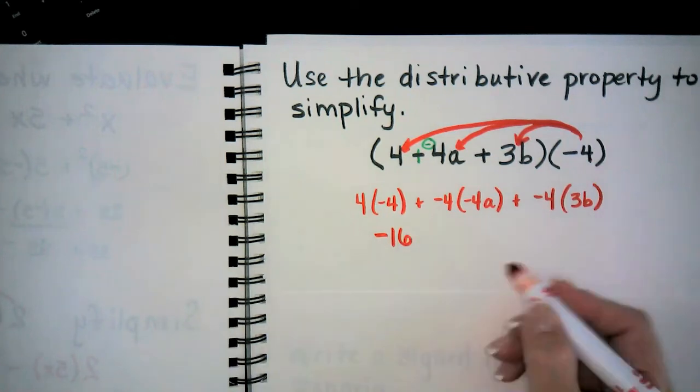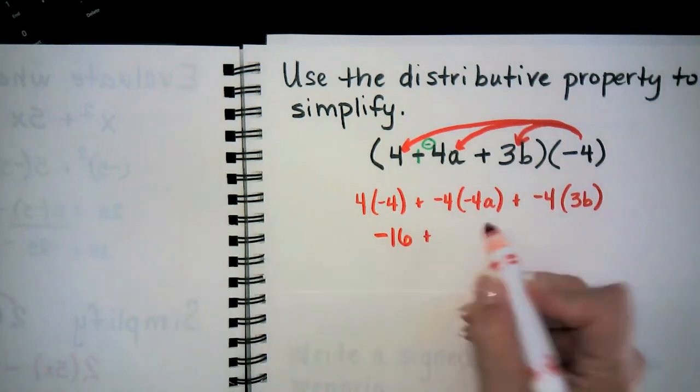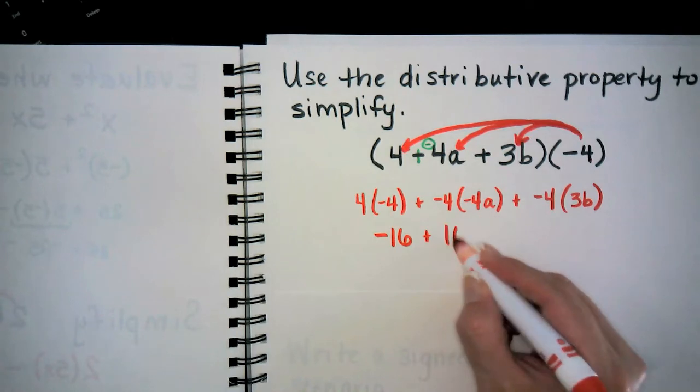Now let's multiply. 4 times negative 4 gives me negative 16, plus negative 4 times negative 4a gives me 16a, plus negative 4 times 3b gives me negative 12b.